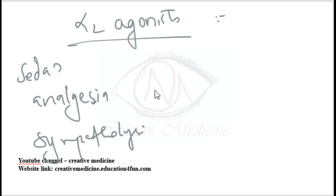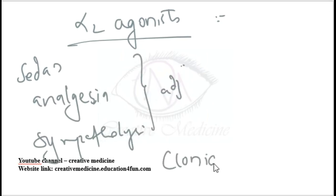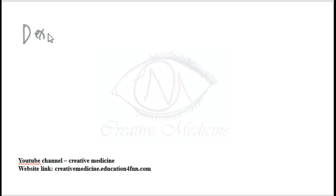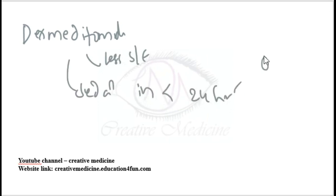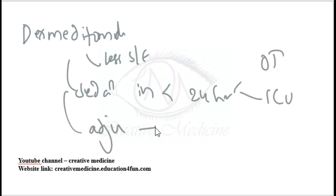Clonidine causes bradycardia and it is used in asystole. Dexmedetomidine is an alpha-2 agonist with lesser side effects. It causes sedation in less than 24 hours, so it is used in OT and ICUs. Dexmedetomidine is an adjuvant which is used in general anesthesia and regional anesthesia.